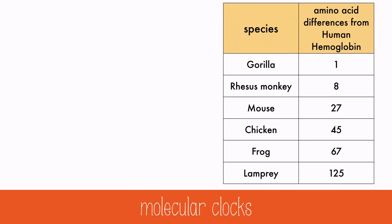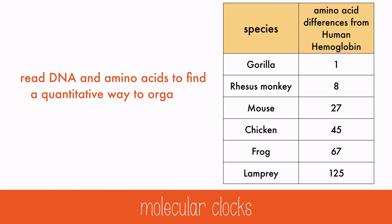Lastly, when we read DNA and amino acids to find a quantitative way to organize evolutionary ancestry, we're using a molecular clock. Mutations happen at a steady rate, and more mutations mean a more distant relationship between species. Fewer mutations means a more recent common ancestor. So, based on the amino acid differences between human hemoglobin and gorilla hemoglobin, gorillas are the closest relative to humans on this list, and lampreys are the furthest.